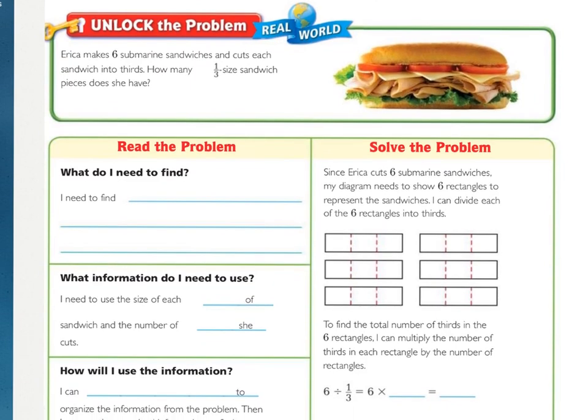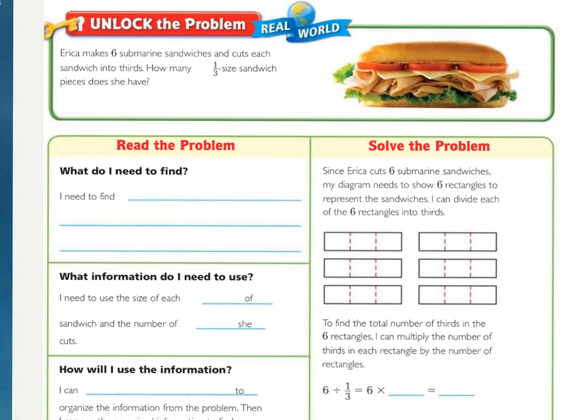Let's look at Unlock the Problem. Erika makes six submarine sandwiches and cuts each sandwich into thirds. How many one-third size sandwich pieces does she have?